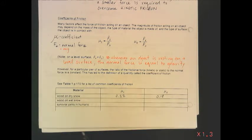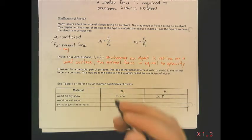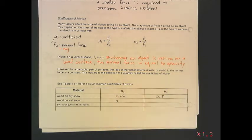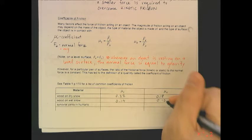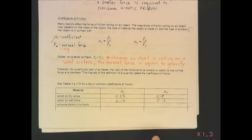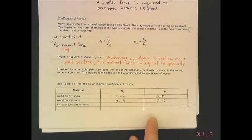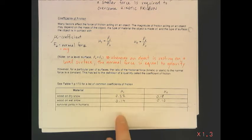If the snow were wet — meaning if it rained or there was water in the snow — then the coefficient of static friction would be 0.14, and for kinetic it would be 0.10. Again showing that static is always greater than kinetic, and in this case there is less friction than if the snow were dry.